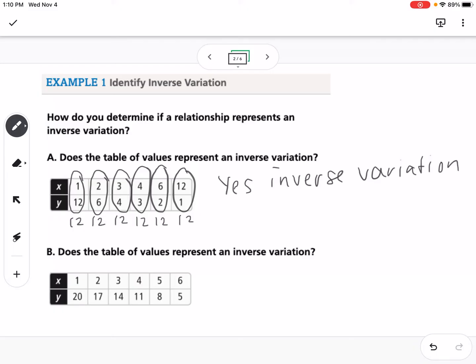For part B, we say 1 times 20 is 20, 2 times 17 is 34, and I can stop right there. If they're not all going to multiply to the same constant value, then we say no, not inverse variation.